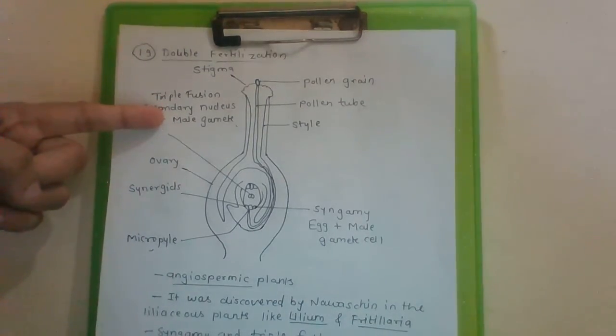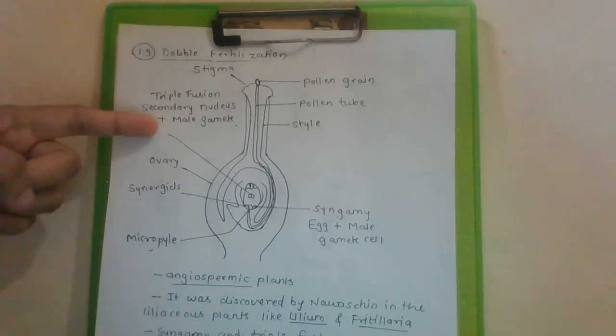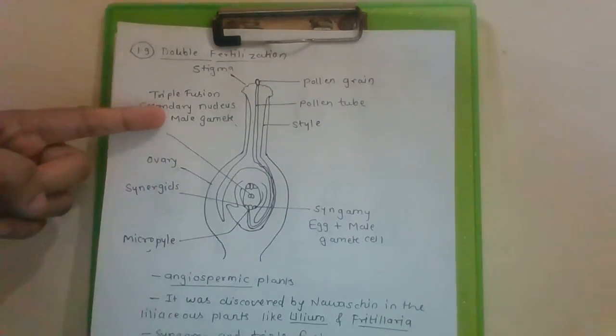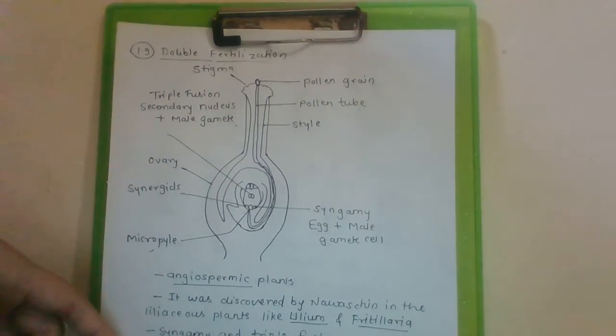In triple fusion, secondary nucleus producing primary endosperm nucleus, PEN, primary endosperm nucleus that develops into triploid endosperm. What get unite in triple fusion? Secondary nucleus and male gamete. And product is primary endosperm nucleus that develops into triploid endosperm.